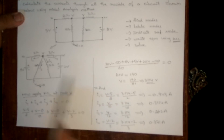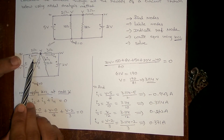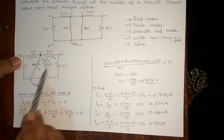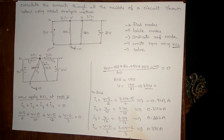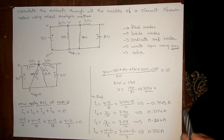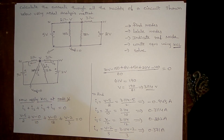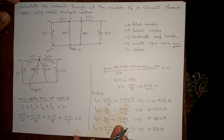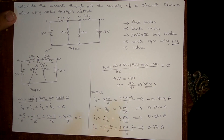So that's it. By using the nodal analysis method, we found the voltage V at node V, and from that voltage we calculated the currents through all the resistances: I1, I2, I3, and I4. If you liked this video, please subscribe to my channel. Thank you.